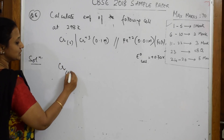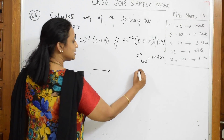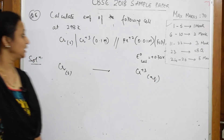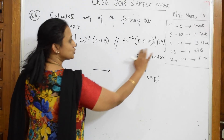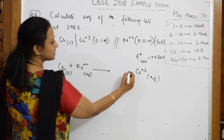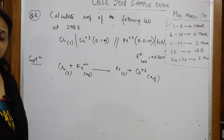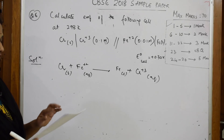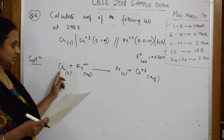For the first half-reaction: chromium solid gives Cr³⁺ aqueous. Next, from Fe²⁺ to Fe solid — so Fe²⁺ aqueous becomes Fe solid. You've written the reactions but they are still not complete; you need to balance them, because only then you get the number of electrons transferred.